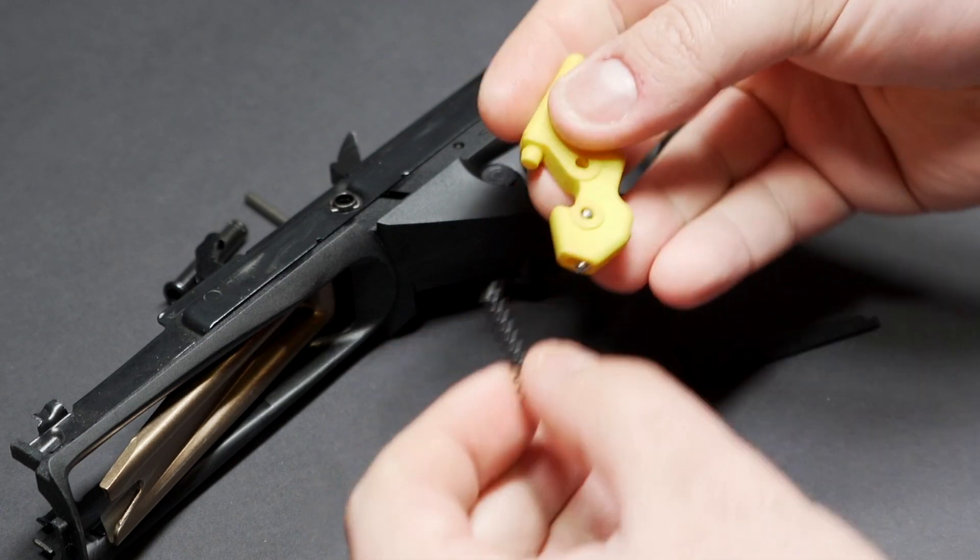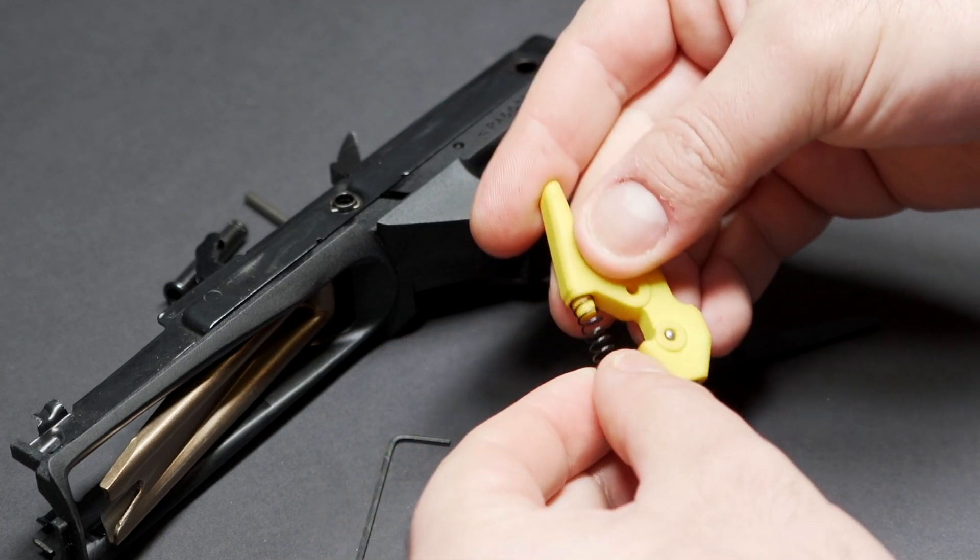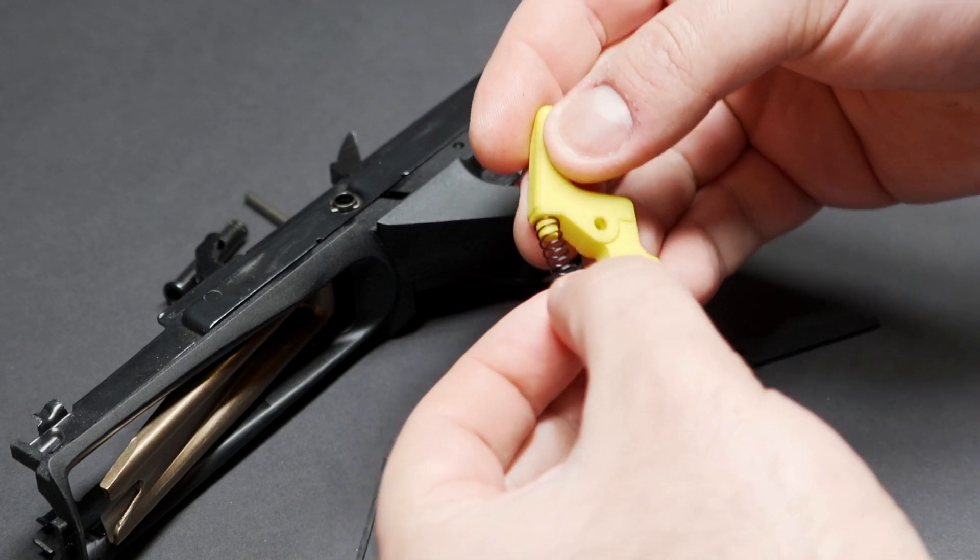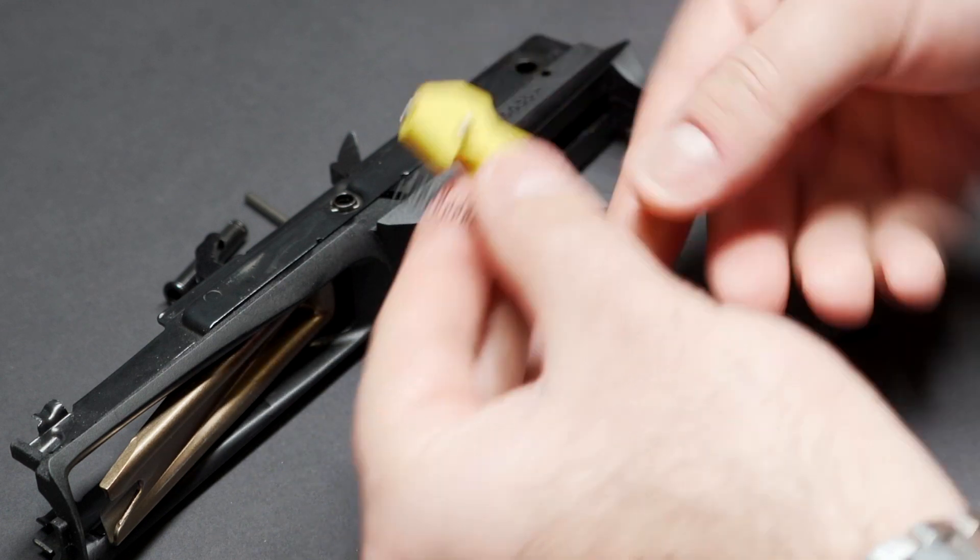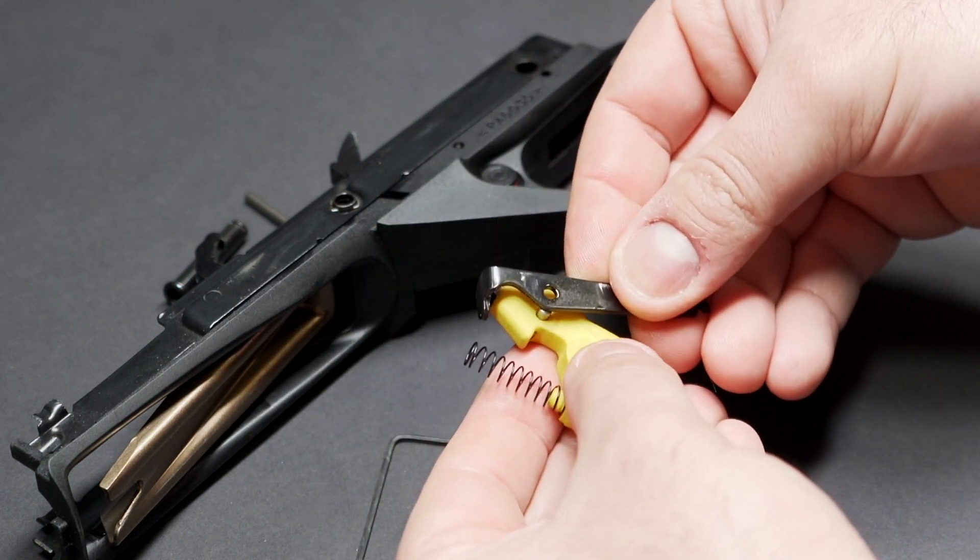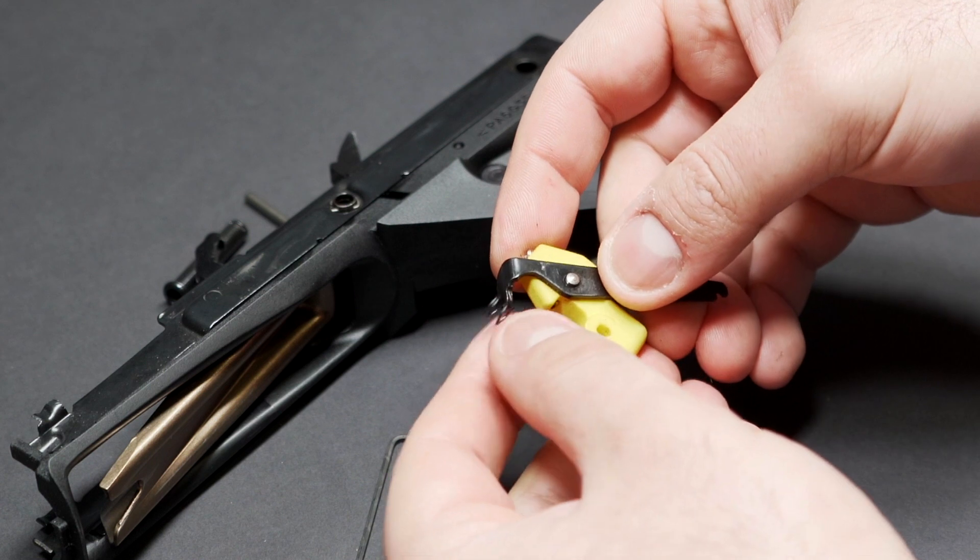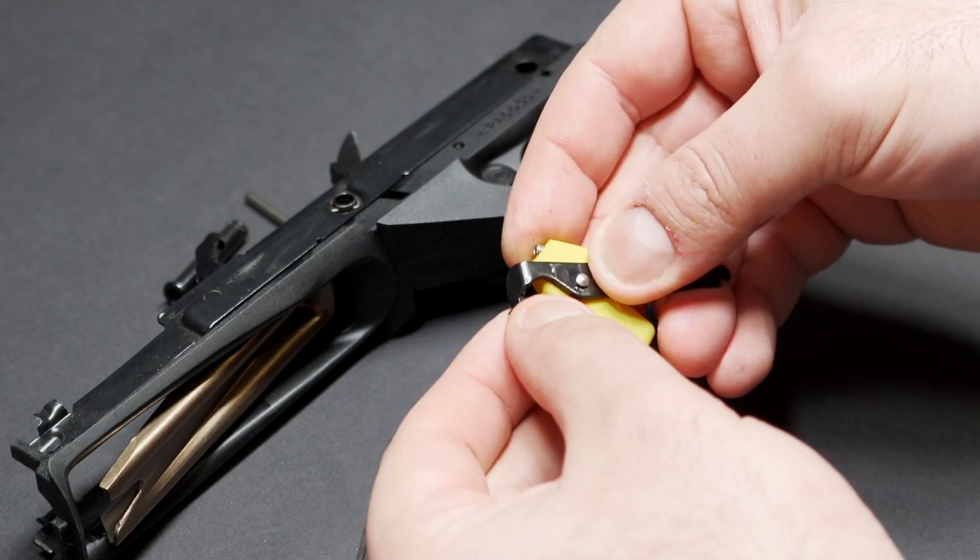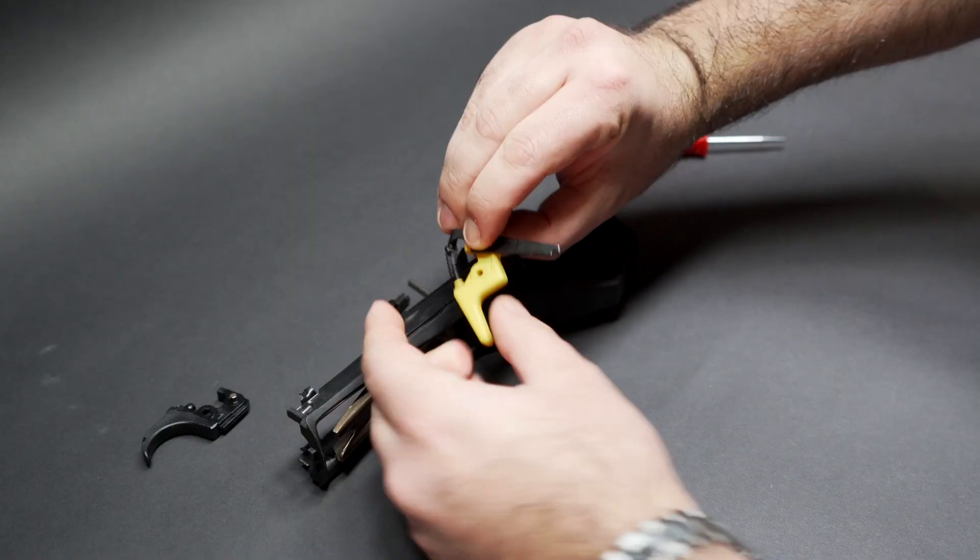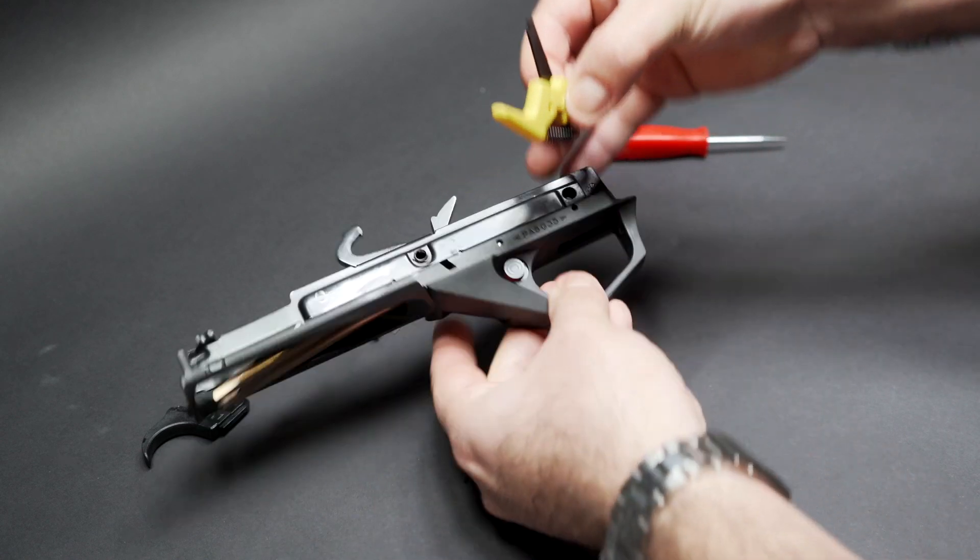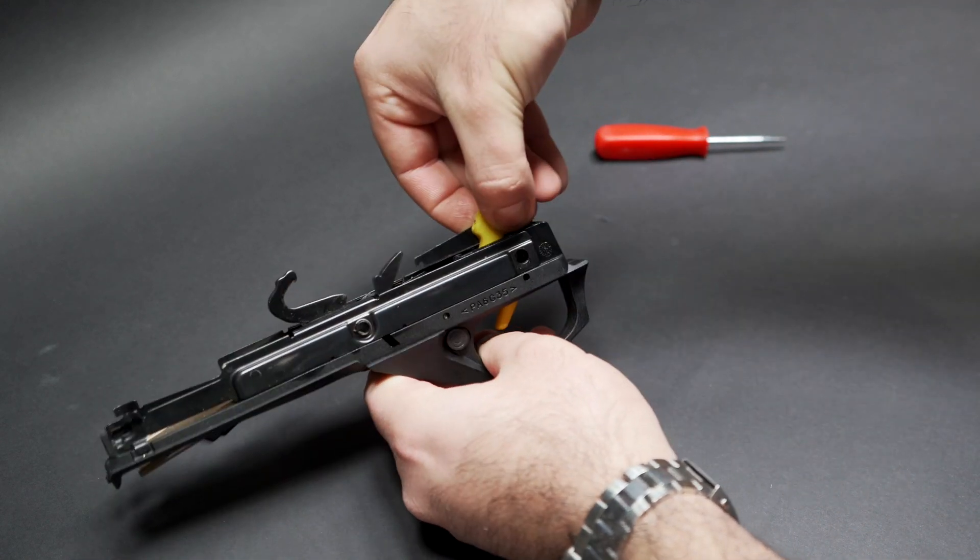Moving on onto the trigger itself. Clip the spring onto the trigger like that. It should click on and be retained by the trigger. Then place the transfer bar on the axle that's already pre-installed on the new trigger, and place the spring on there. Pinch it to hold the whole unit together and drop it in.